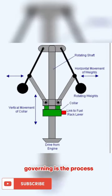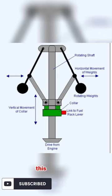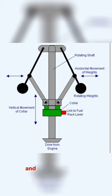Governing is the process of controlling the speed of an IC engine. This is important for maintaining the engine's efficiency and preventing damage.